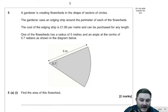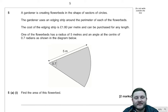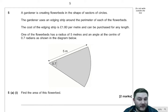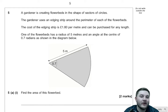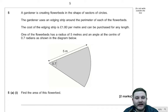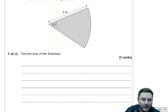This looks like a nice little problem solving question. A gardener is creating flower beds in the shape of sectors of circles. The gardener uses an edging strip around the perimeter of each flower bed. The cost of the edging strip is £1.80 per metre and can be purchased for any length. One of the flower beds has a radius of five metres and an angle at the centre of 0.7 radians, as shown in the diagram below. Find the area of the flower bed.